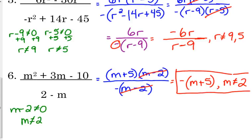A student asks a question — the answer is: because it's in the numerator, it's okay for a factor to equal zero there. Zero divided by anything is just zero. We can't divide by zero, so it's only factors in the denominator that cause us to exclude values. Only the ones in the denominator matter.